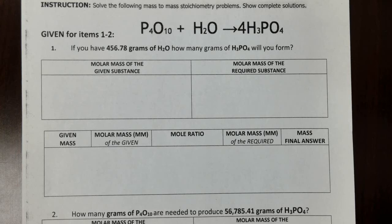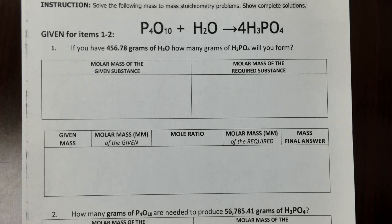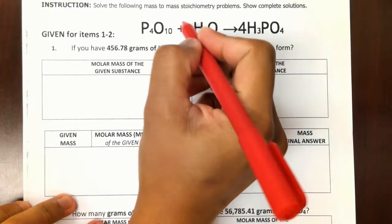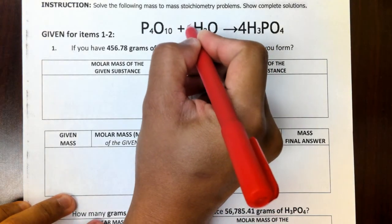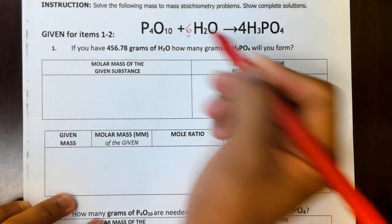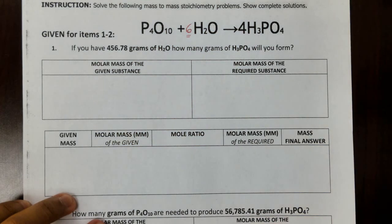Looking at hydrogen: on the left side we have 2, and on the right side it's 4 times 3, which is 12. So we need to make the hydrogen on the left side equal 12. Since 4 times 3 is 12, we can make the 2 into 12 by multiplying by 6, putting a coefficient of 6 so that 6 times 2 equals 12.